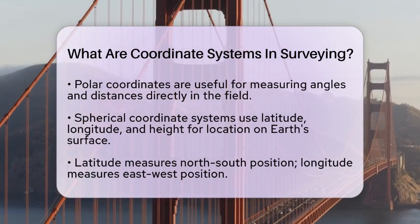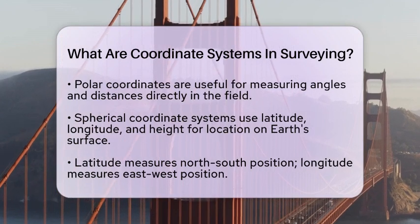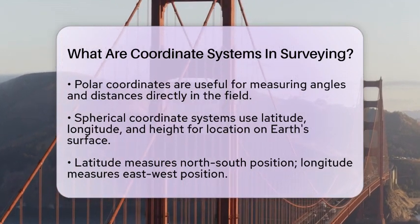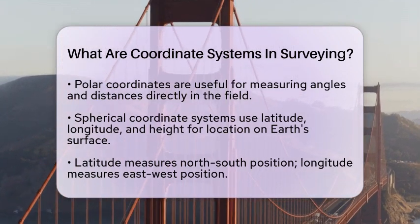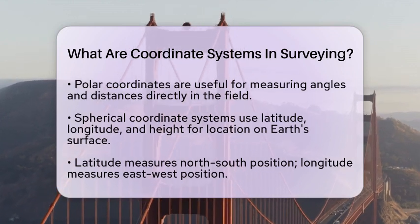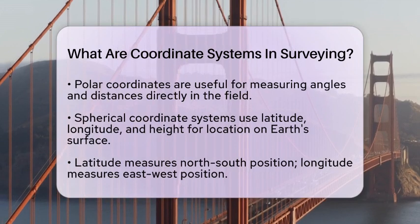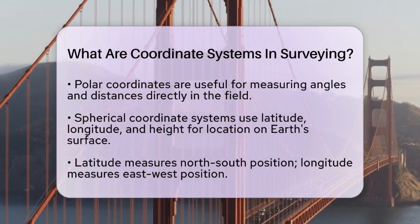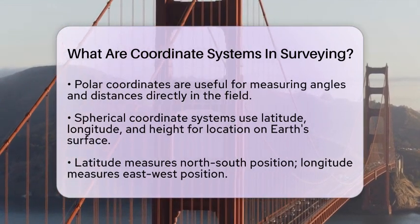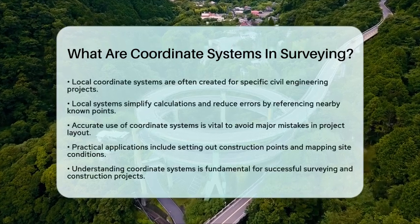In civil engineering, especially in land surveying, local coordinate systems are often created for specific projects. These local systems simplify calculations and reduce errors by referencing a nearby, well-known point as the origin. This approach is practical for construction sites, highways, bridges, and utility installations, where precise layout is essential.